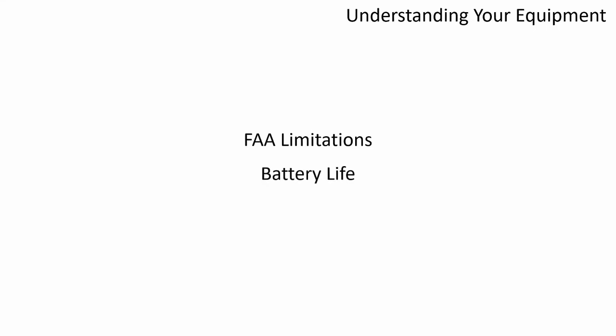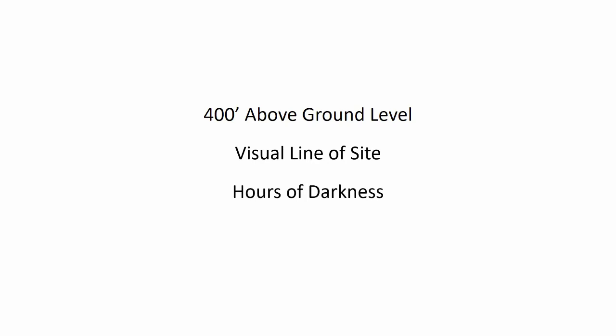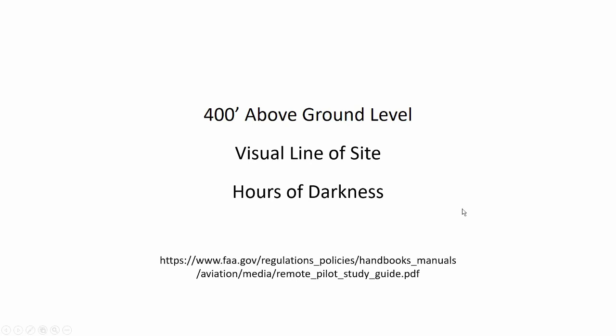The next section is understanding your equipment. For this we need to look at FAA limitations, battery life, and sensor capabilities. The main FAA limitations are the 400 feet above ground level rule, visual line of sight, and hours of darkness — all big considerations in mission planning for search and rescue. All three of these can be waived; you can find that process on FAA.gov or in the remote pilot study guide linked below.